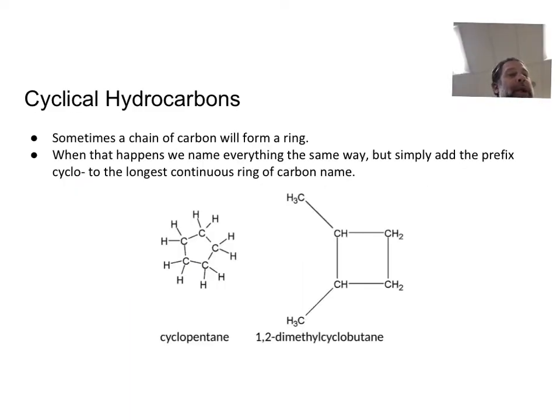So the ring can be square shaped or it can be any shape really, but the longest continuous string of carbons essentially has to form some type of closed structure. And that closed structure is what makes it have the ring. And naming them is very, very simple.